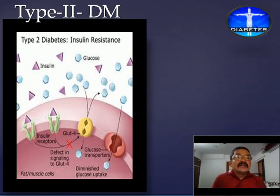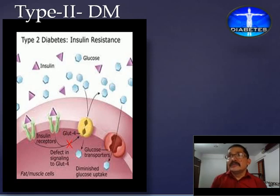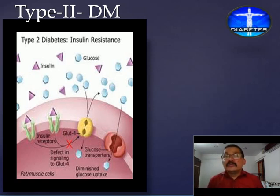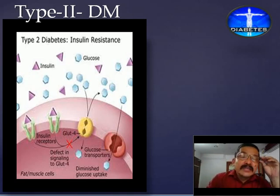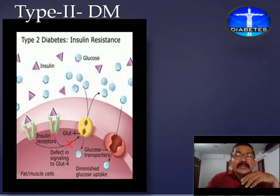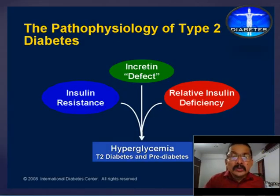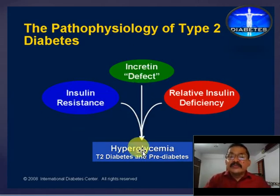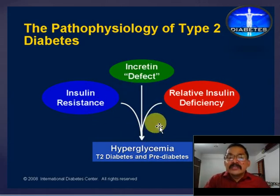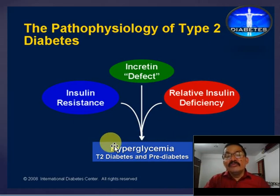Next is relative insulin deficiency, meaning the secretion of insulin may not be enough to maintain normal metabolism. In such conditions, it may result in type 2 diabetes. So the pathophysiology of type 2 diabetes is mainly due to insulin resistance, incretin defect, and relative insulin deficiency — all of which together result in hyperglycemia of type 2 diabetes, or the patient becomes pre-diabetic.